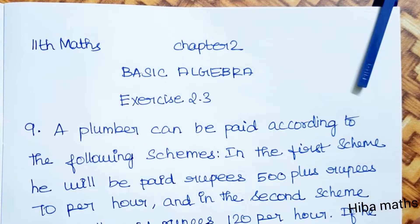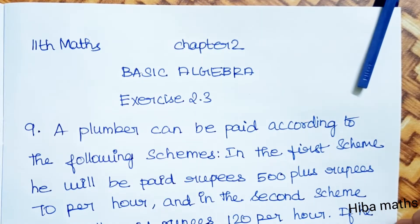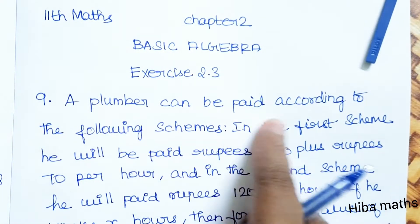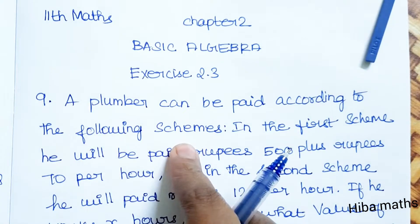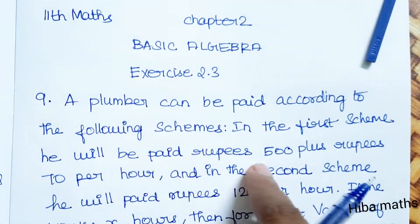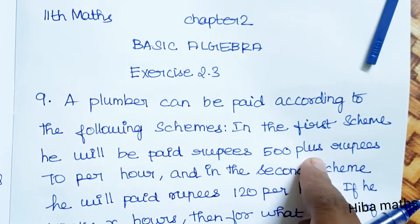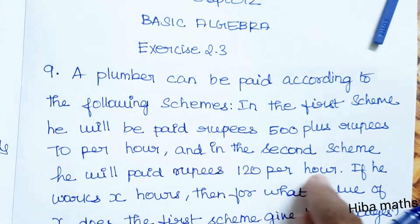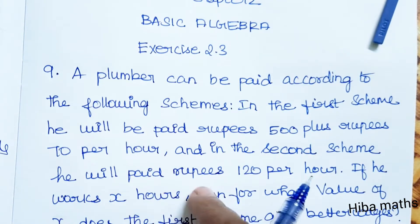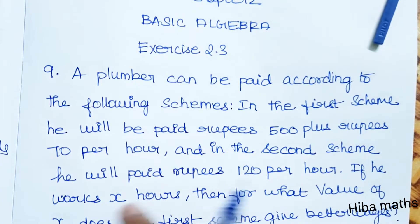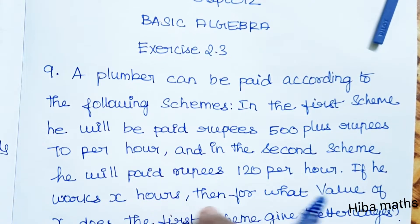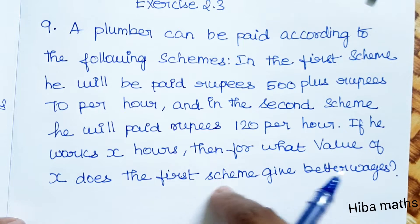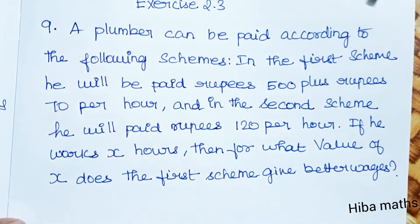Hello students, welcome to Hibamax 11 standard, Chapter 2 Basic Algebra, Exercise 2.3, Problem 9. A plumber can be paid according to the following schemes. In the first scheme he will be paid rupees 500 plus rupees 70 per hour. In the second scheme he will be paid rupees 120 per hour. If he works X hours, then for what value of X does the first scheme give better wages?